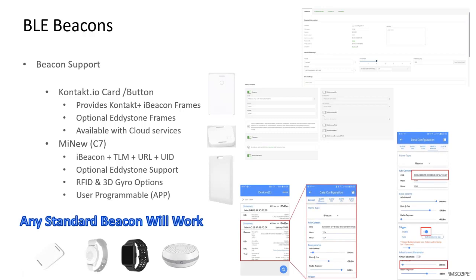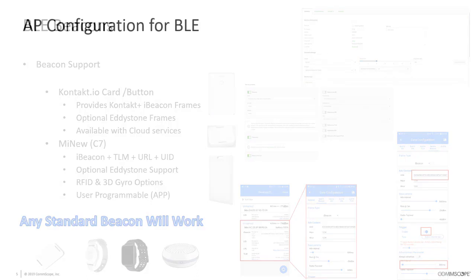When looking at beaconing environments, there are many beacons available with different tools, back-end services, and management for configuration. Some are proprietary, offering unique payloads and back-end services to decode them. Others are industry standard, working on Eddystone or iBeacon payload formats such as UUID and EUID. Any standard iBeacon or Eddystone beacon will work within the Ruckus IOT suite, providing all the same capabilities from asset tracking to location services.